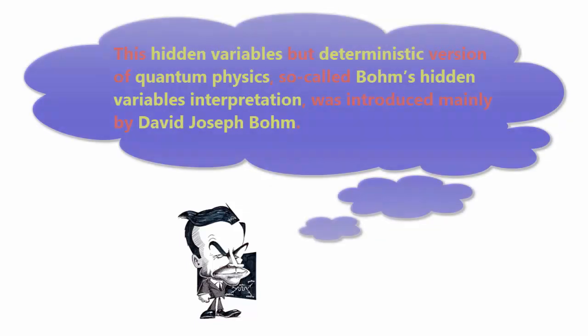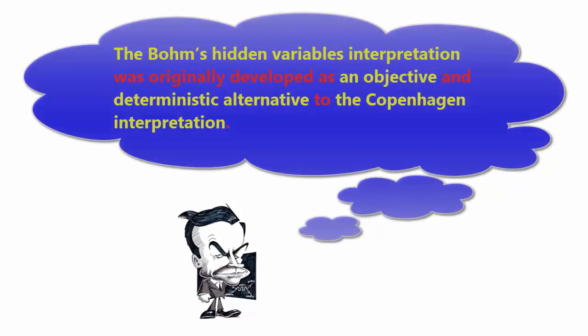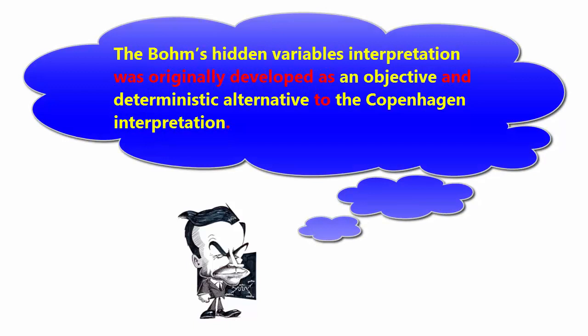This hidden variables but deterministic version of quantum mechanics, the so-called Bohm's hidden variables interpretation, was introduced mainly by David Joseph Bohm. Bohm's hidden variables interpretation was originally developed as an objective and deterministic alternative to the Copenhagen interpretation.